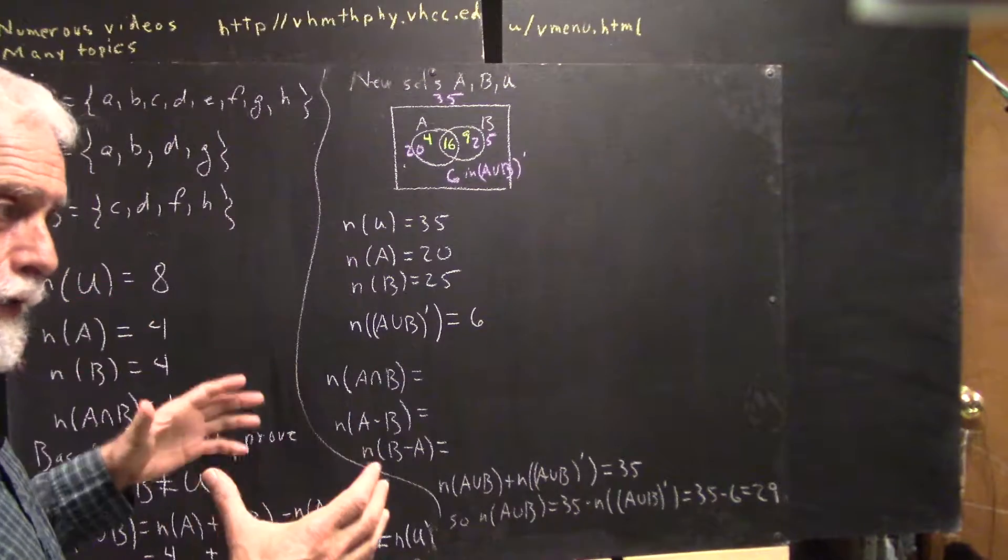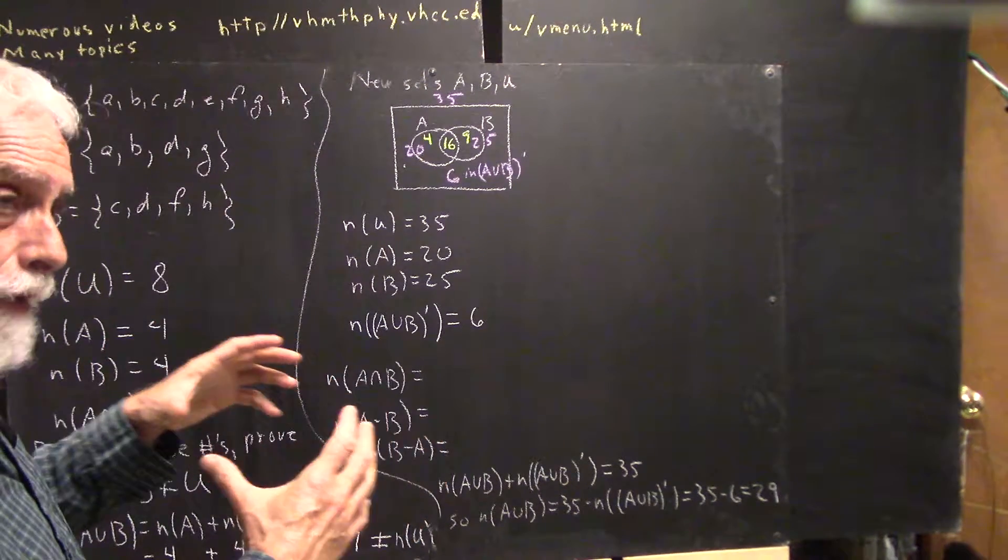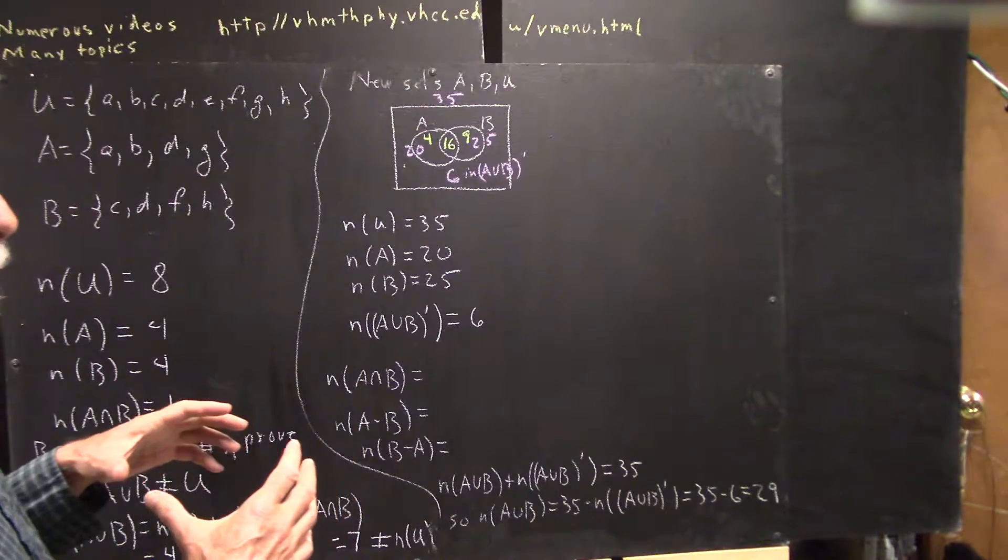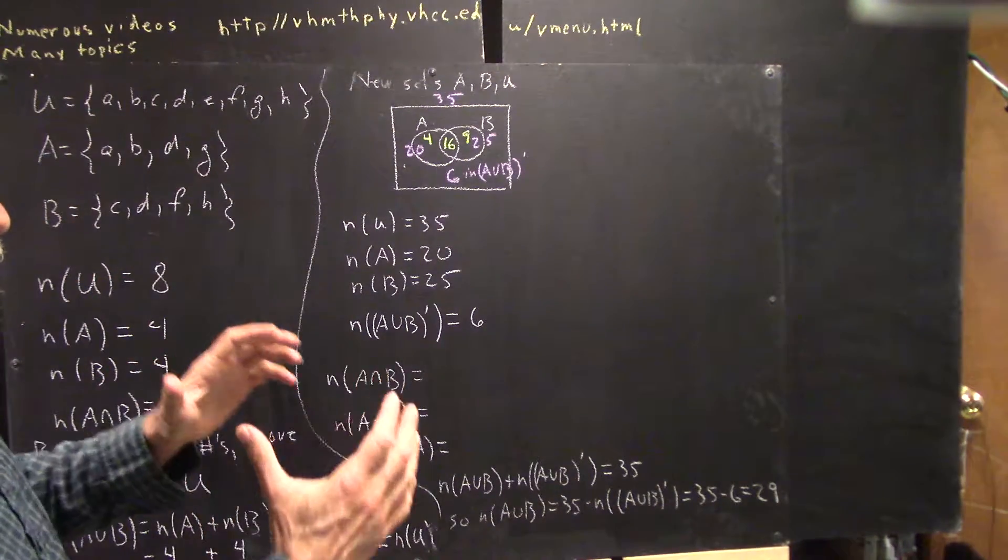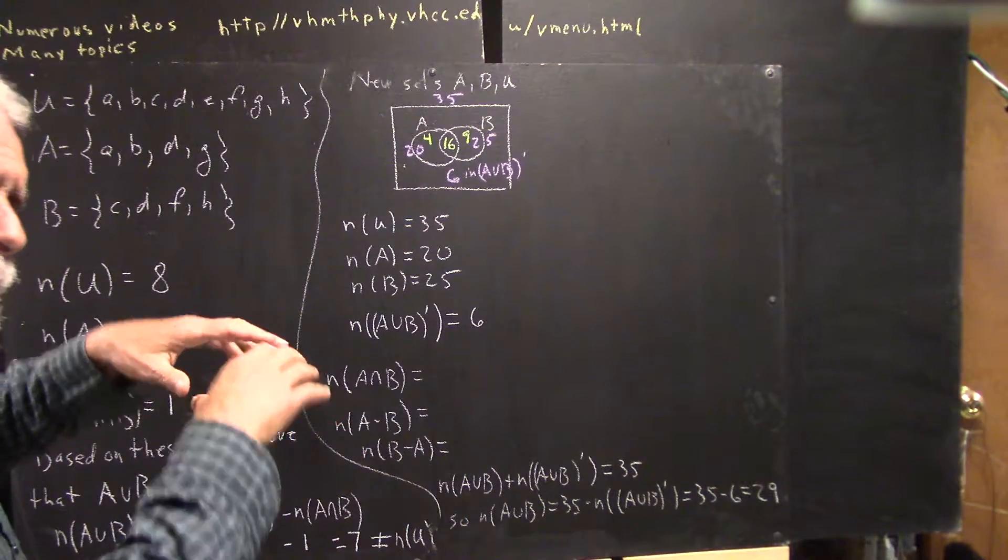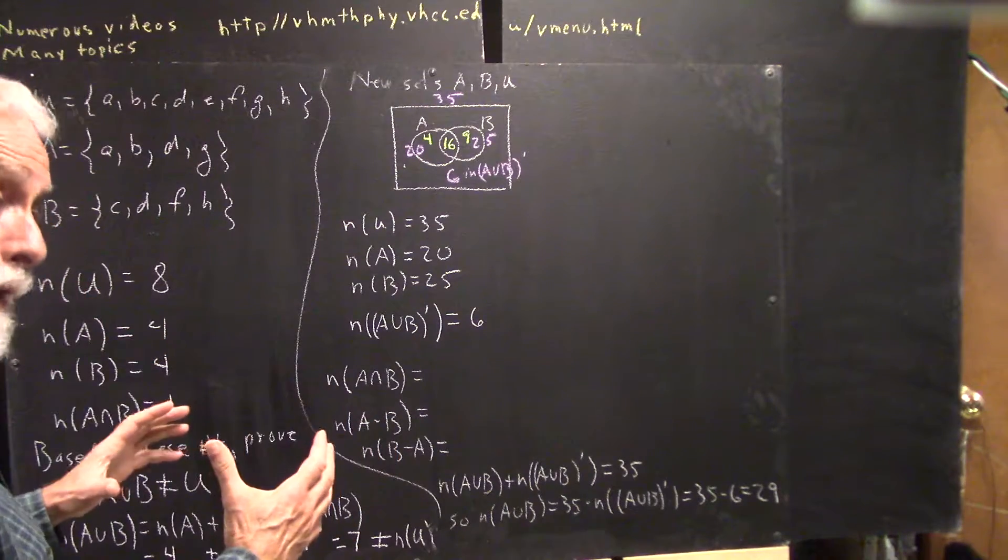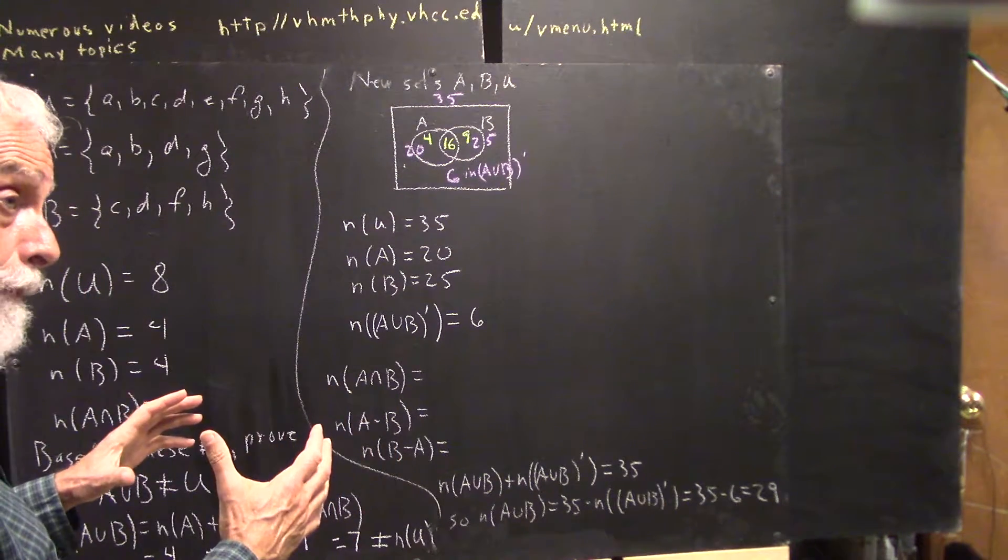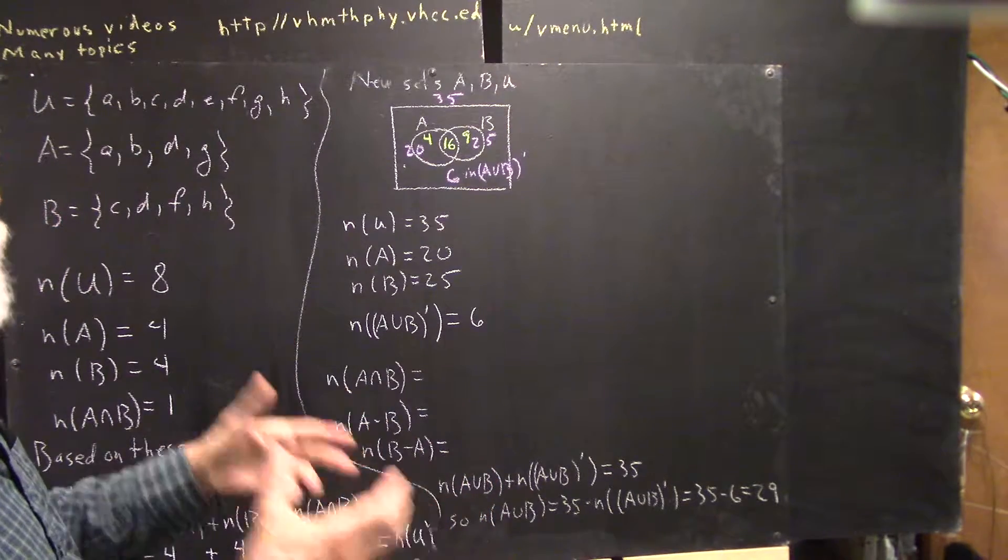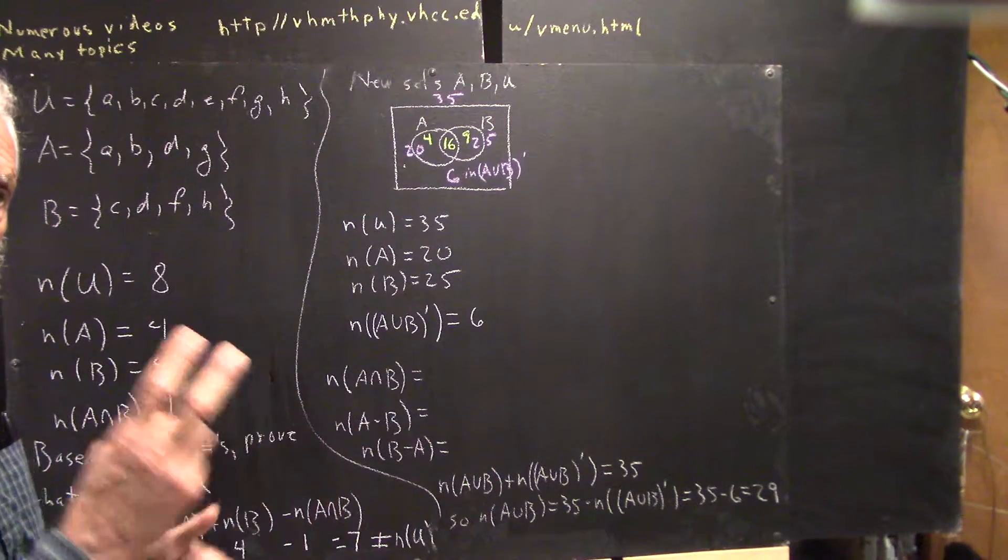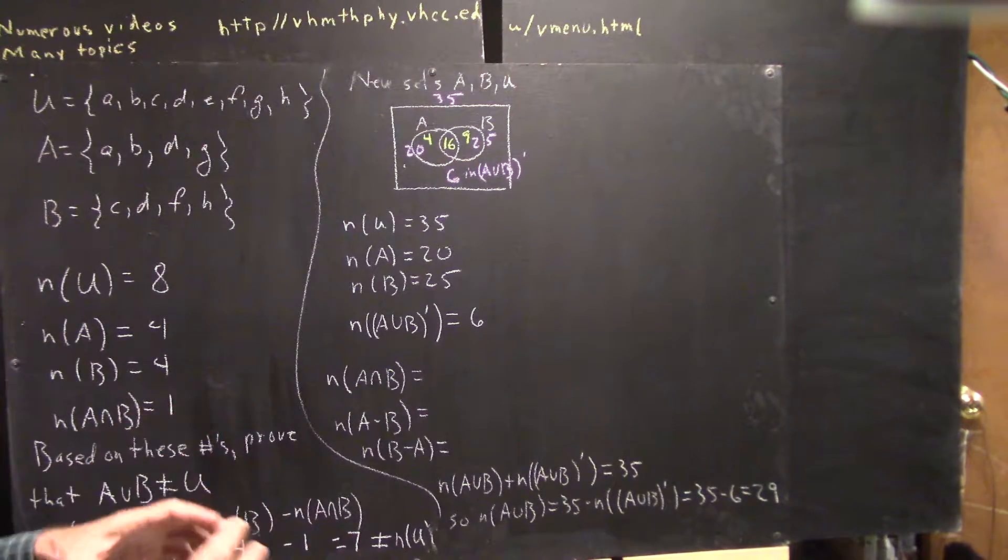But, in general, it's not so. Why is that? Because the sets often overlap, and if the sets overlap, then if we add the number in A to the number in B, all the elements that are in the overlap, or the intersection, are counted among the number that are in A and also among the number that are in B, so we're counting those elements twice. And that doesn't give us the total number of elements in the union.